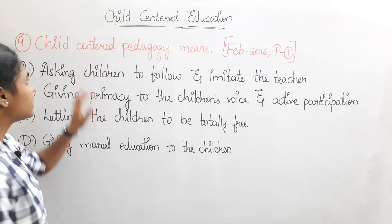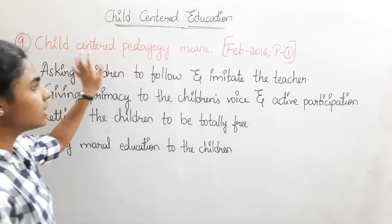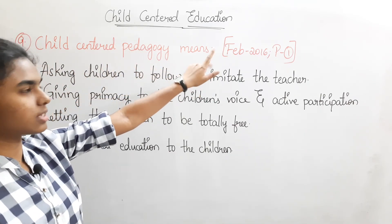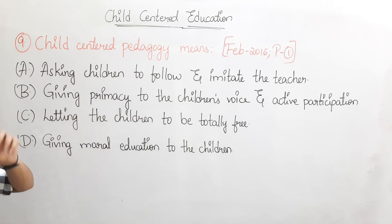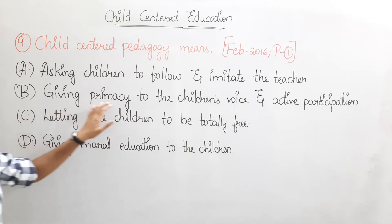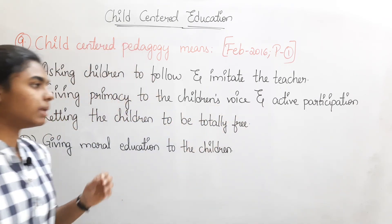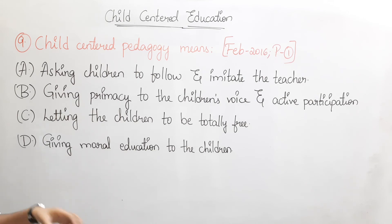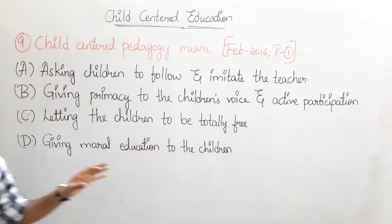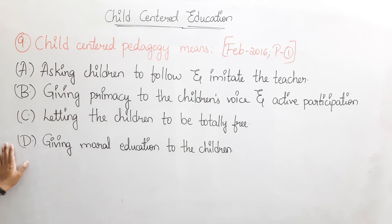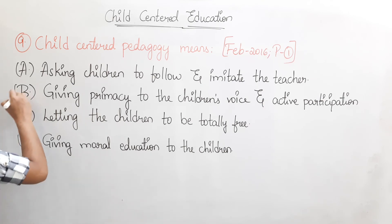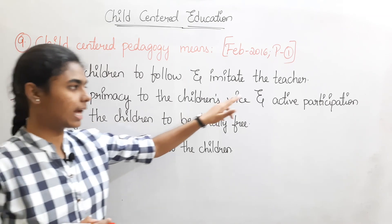The ninth question is: child-centered pedagogy means what? This is from February 2016, Paper 1. Option A: asking children to follow and imitate the teacher. Option B: giving primacy to the children's voice and active participation. Option C: letting children be totally free. Option D: giving moral education to the children. The correct answer is Option B: giving primacy to the children's voice and active participation.